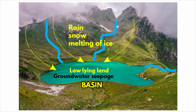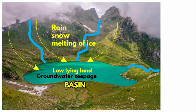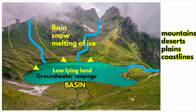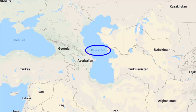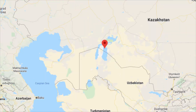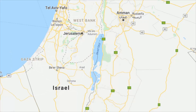Lakes are found in every kind of environment: mountains, deserts, plains, and near coastlines. Lakes are both small as well as big in size. Small lakes are often referred to as ponds, whereas a big lake can also be called a sea. The Caspian Sea in Europe and Asia is the world's largest lake. Then there is the Aral Sea, Dead Sea, etc.